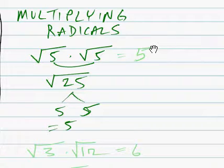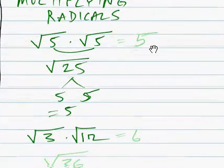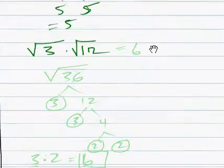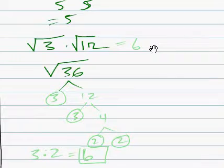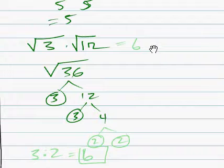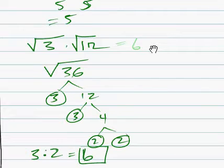Let's try another one. Root 3 times the root of 12 gives us root 36. We're going to factor that. We get a 3 and a 12, and a 3 and a 4, and a 3 and a 2 and a 2. So we've got a 3 outside the radical. We have a pair of 3s, we have a pair of 2s.